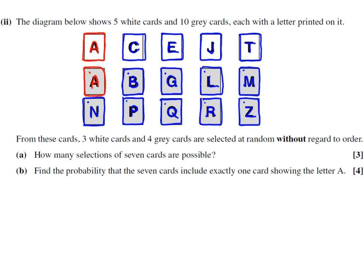Part two says we've got cards, this time they've got letters on, and they've coloured the cards. Five are white and ten are grey. What I've done as a little key is put a dot on my grey ones because I will be moving these about a little bit. If we look at part A, from these cards, three white cards and four grey cards are selected without regard to order, so order doesn't matter. How many selections of seven cards are possible?